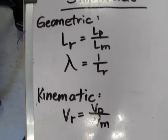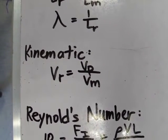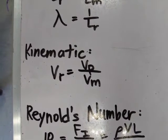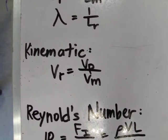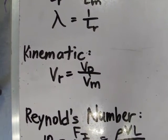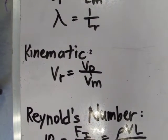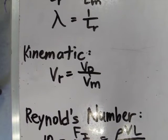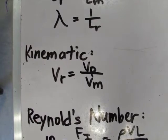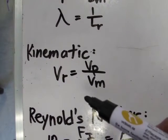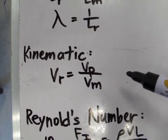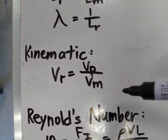Second is kinematic similarity. Kinematic similarity should have geometric similarity, and also all the ratios of the velocity at all points in the flow must be the same. So in order to use this, those two conditions should be satisfied. One of the equations for kinematic similarity is that the velocity ratio, Vr, would be equal to the velocity of the prototype over the velocity of the model.